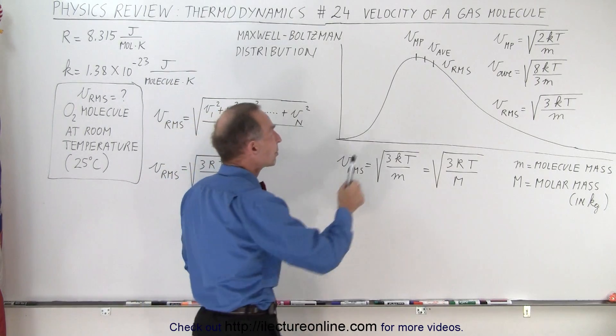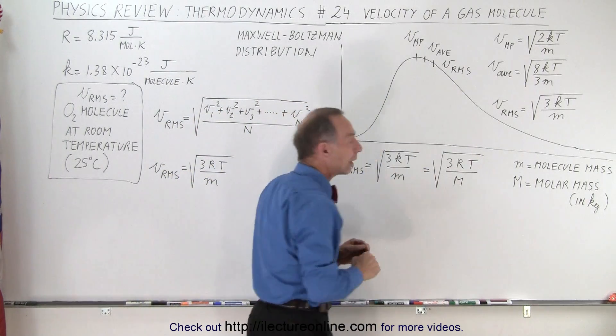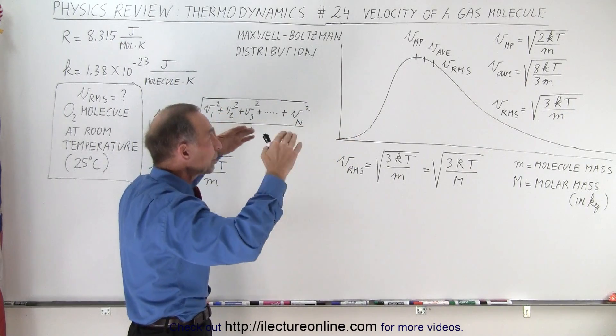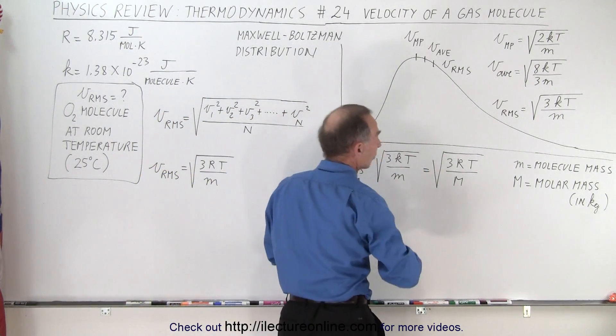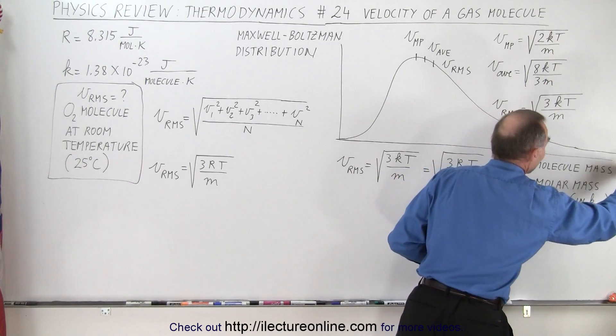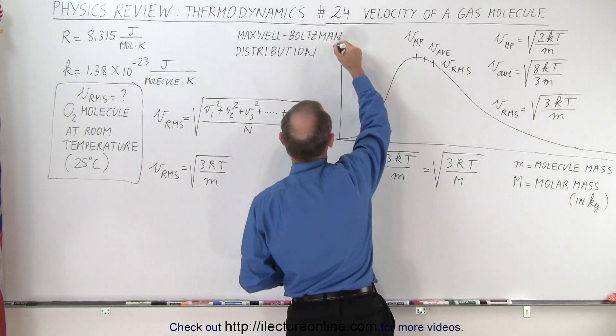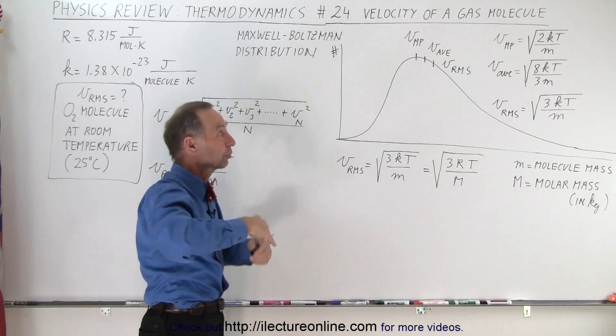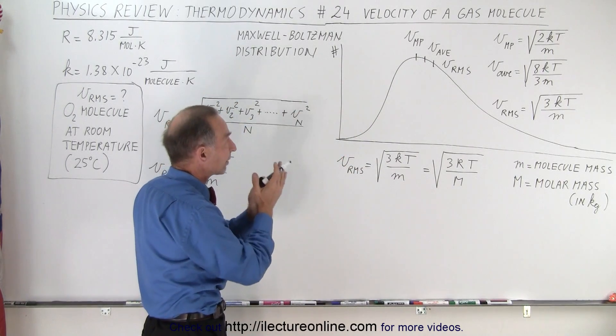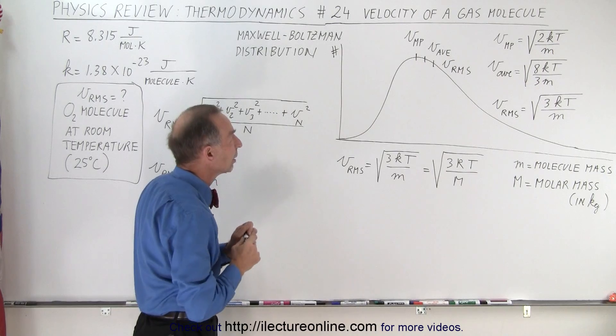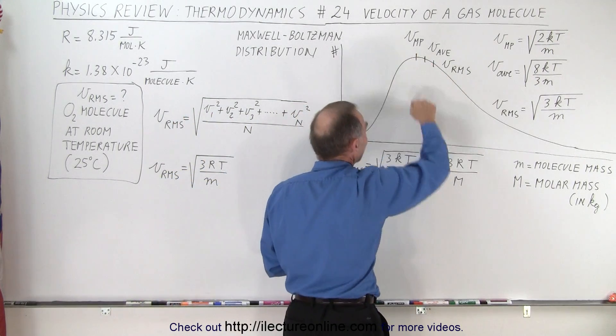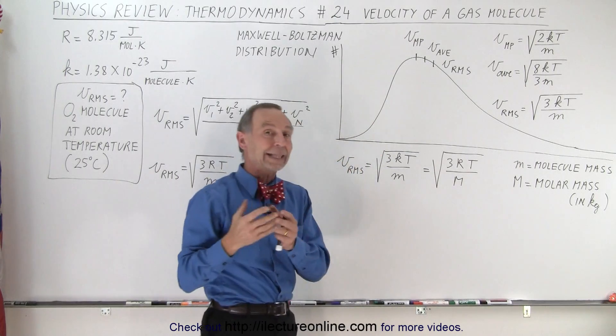Notice there's a peak right here at the very top, and that is where the greatest fraction of all the molecules in a gas will be traveling at this particular speed. On the horizontal axis, we have velocity. On the vertical axis, we have number of molecules. So the higher the curve, the greater the number of molecules traveling at that particular speed. When we get to the very top, that means the greatest fraction of molecules will be traveling at that speed.